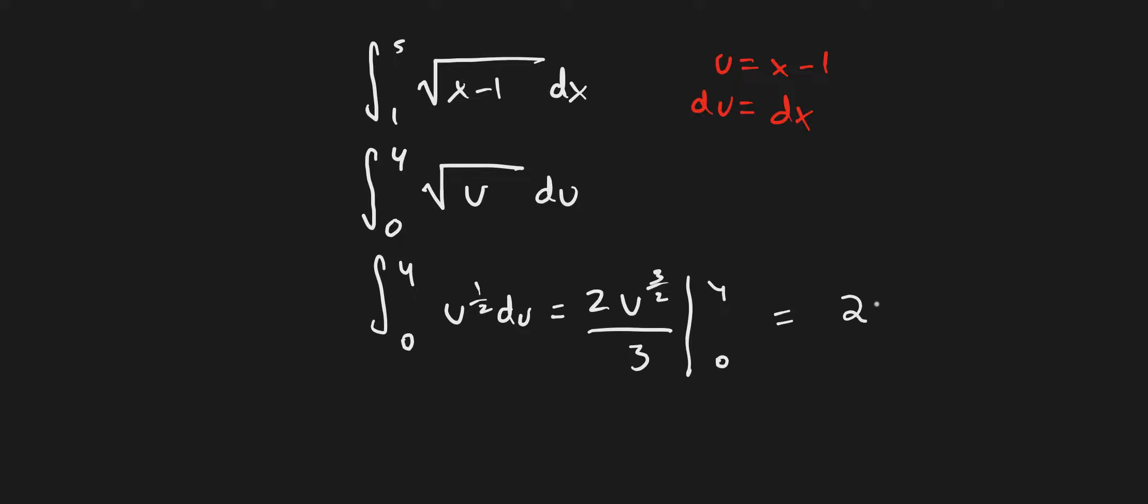So this is just going to be 2 times 4^(3/2) over 3 minus 0. That's just going to be 0, so we're not going to worry about that. This is going to be equal to our answer.